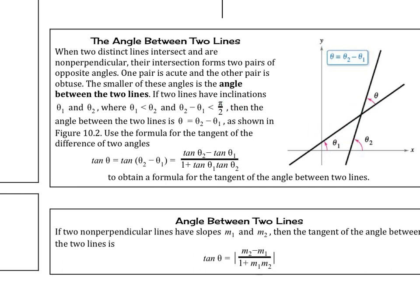If two lines have inclinations theta 1 and theta 2, where theta 1 is less than theta 2, and theta 2 minus theta 1 is less than pi over 2, then the angle between the two lines is theta equals theta 2 minus theta 1, as shown in the figure.